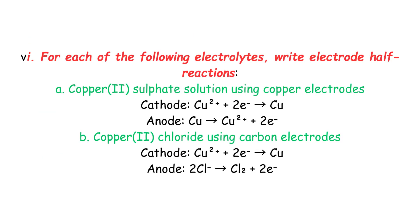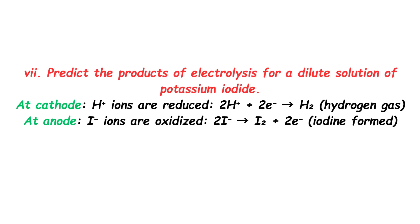Long Question 6: For each of the following electrolytes, write electrode half-reactions: A. Copper(II) sulfate solution using copper electrodes. B. Copper(II) chloride using carbon electrodes. Long Question 7: Predict the products of electrolysis for a dilute solution of potassium iodide. At cathode, H⁺ ions are reduced: 2H⁺ + 2e⁻ → H₂ (hydrogen gas). At anode, I⁻ ions are oxidized: 2I⁻ → I₂ + 2e⁻ (iodine formed).